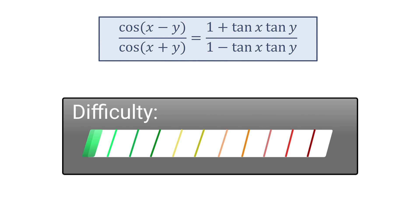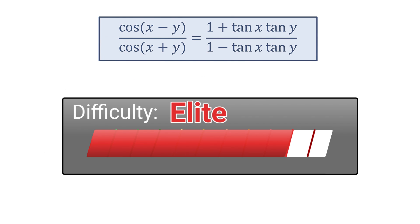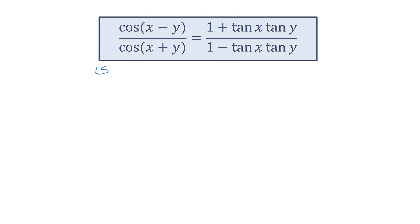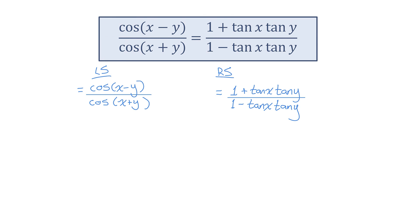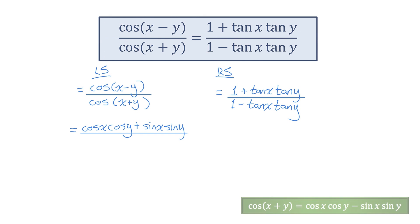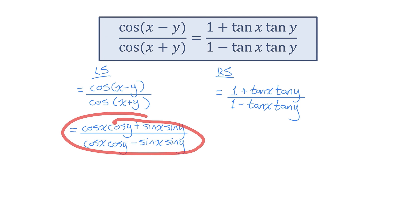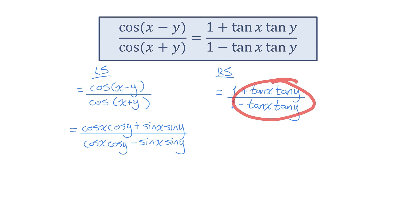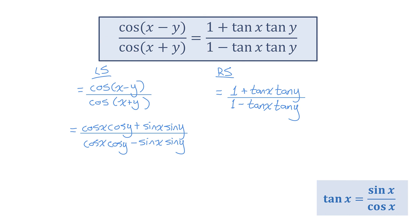Identity number nine. I'll separate into left side and right side. I notice on the left side of this equation I have two compound angle identities I can use. I'll rewrite cosine of (x minus y) using the compound angle identity: that's equal to cos x cos y plus sine x sine y. And cos of (x plus y) is cos x cos y minus sine x sine y. Now on the left side I have only sine and cos functions, but on the right side I only have tan functions.